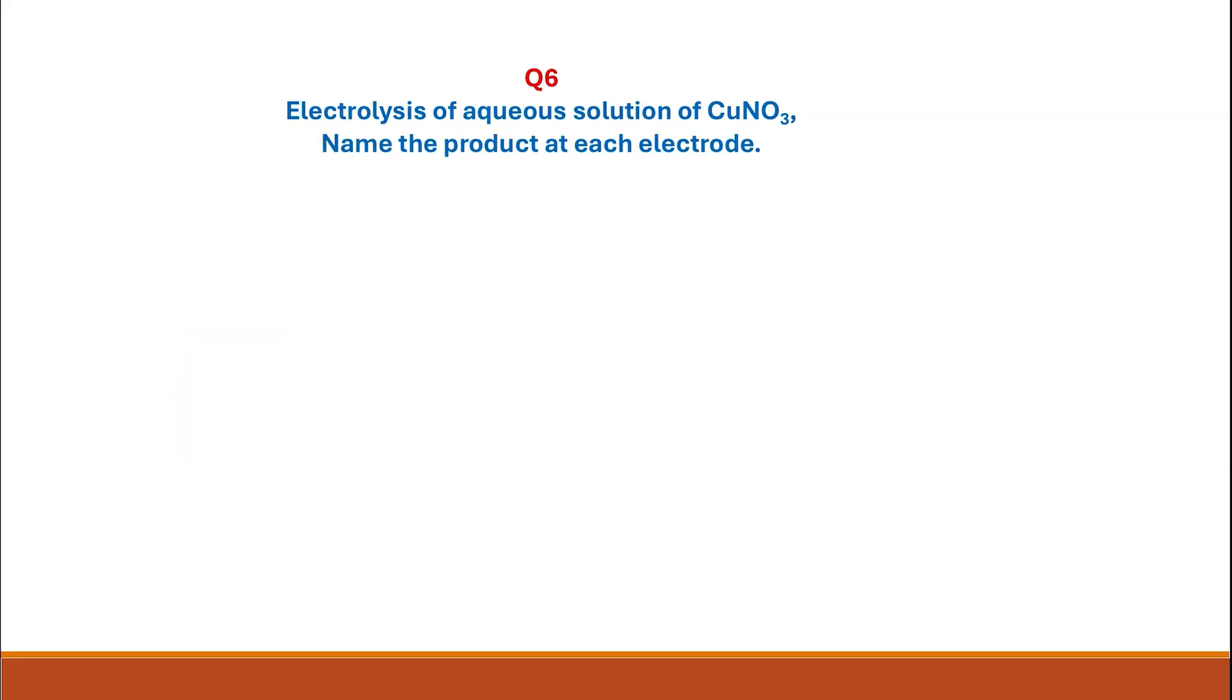Question 6: Electrolysis of aqueous solution of copper nitrate. Name the product at each electrode. The answer at the negative electrode you're going to have copper, and at the positive electrode you're going to have oxygen.